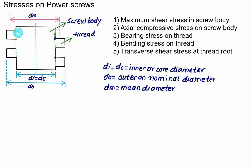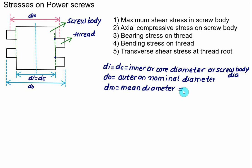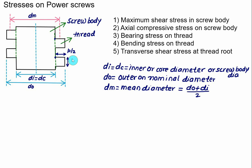The diameter of the screw body is equal to DC, the inner or core diameter. Di can be referred to as the inner diameter, core diameter, or screw body diameter. DO represents the outer diameter, also called the nominal diameter. DM represents the mean diameter, calculated as (DO + Di) / 2. For square threads, the height of the thread — how much it protrudes from the screw body — equals pitch/2, and the width remains uniform and constant over the entire length, also equal to pitch/2.